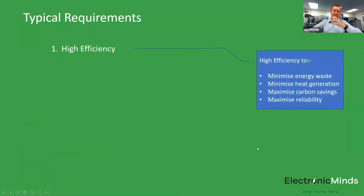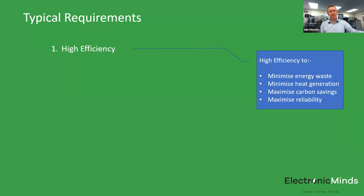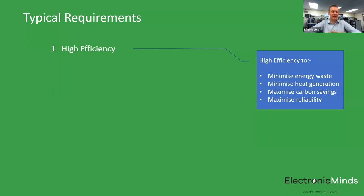I'm going to talk mainly about that box of electronics — whether it's in the car for AC charging or in the station for DC charging, both are doing roughly the same thing: converting single or three-phase AC into high-voltage DC to charge a battery. Key requirements include high efficiency to minimise energy waste, carbon emissions, and heat generation. Heat management inside electronics is difficult, so high efficiency keeps things cool and improves reliability.